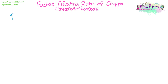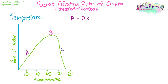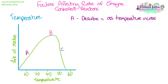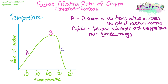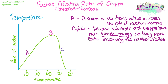Now let's look at factors affecting the rate of enzyme-controlled reactions. First, let's look at temperature. We need to be able to both describe and explain these graphs. Starting with part A of the graph: as the temperature is increasing, the rate of reaction is increasing. The explanation for this is that increasing the temperature increases the rate of reaction because the substrate and the enzyme both have more kinetic energy. This means they move around faster, which increases the number of collisions between enzyme and substrate, so more enzyme-substrate complexes are formed.